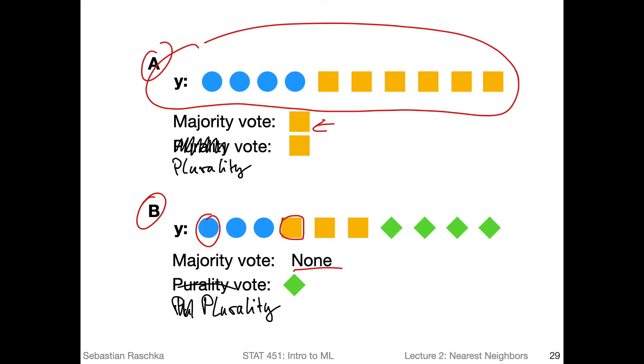In this case we actually have a plurality. So the plurality means the data point that occurs most often in this dataset here. So in this case it would be the diamond. But usually in practice we're not that picky with these words, we just say majority.